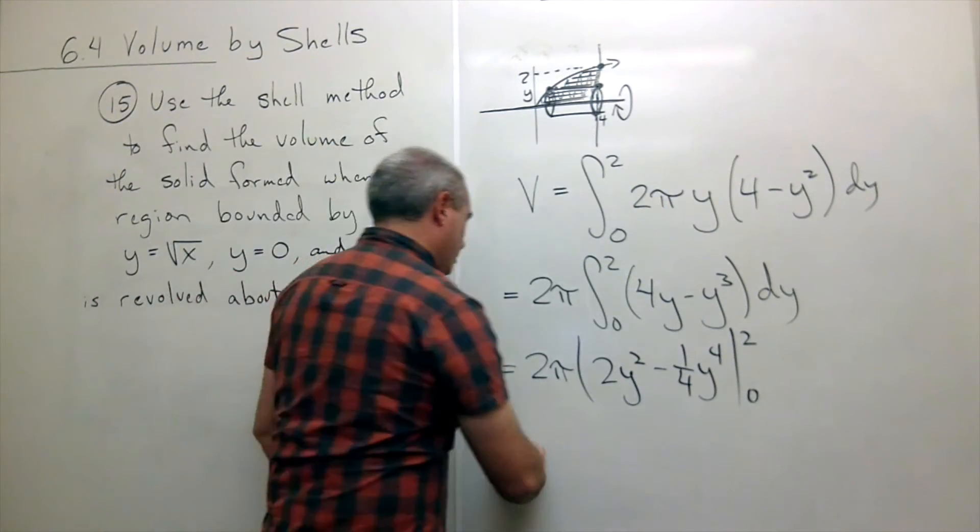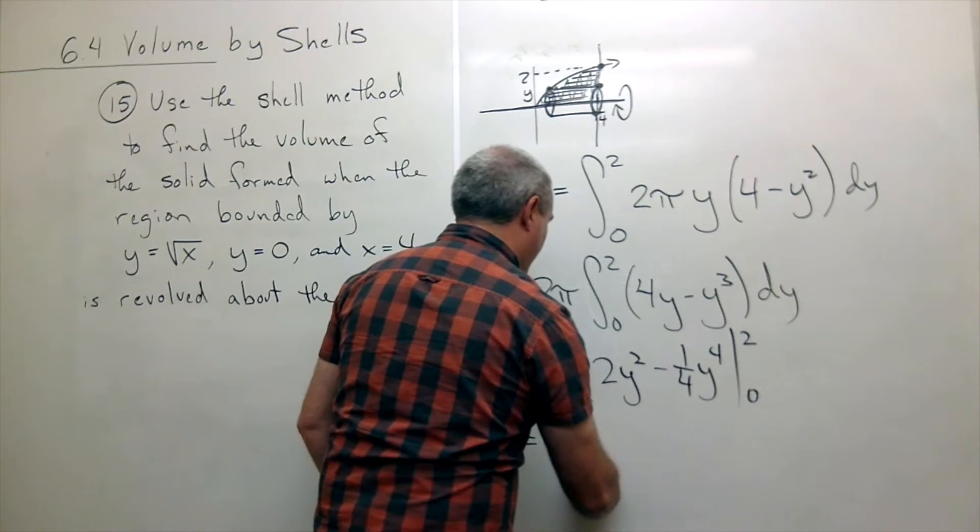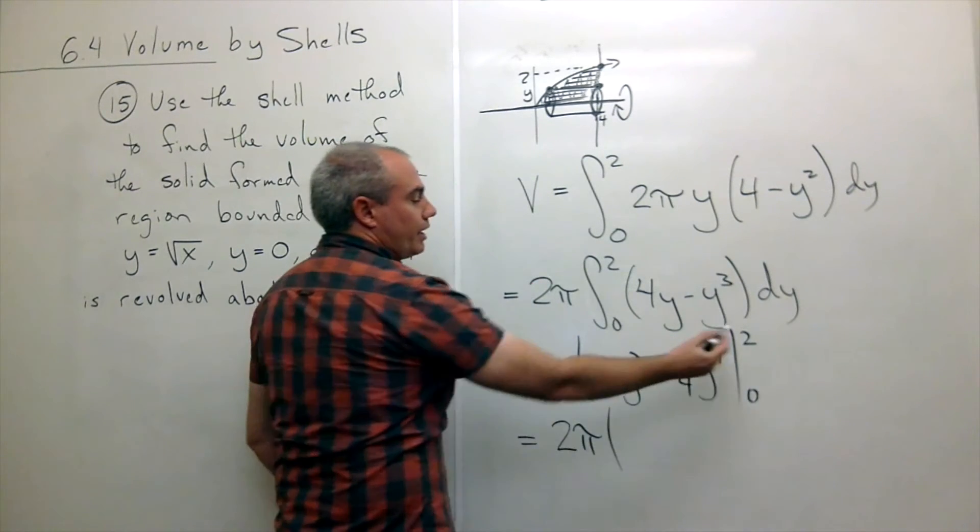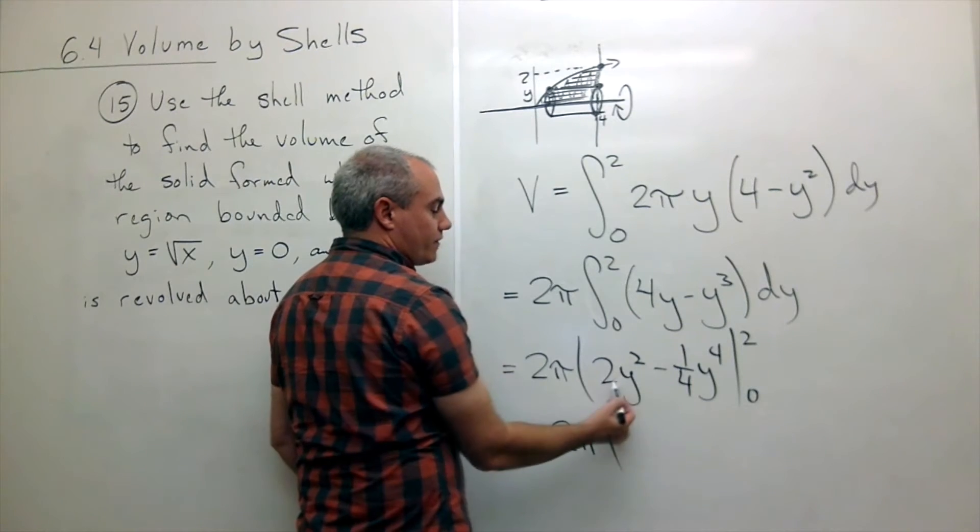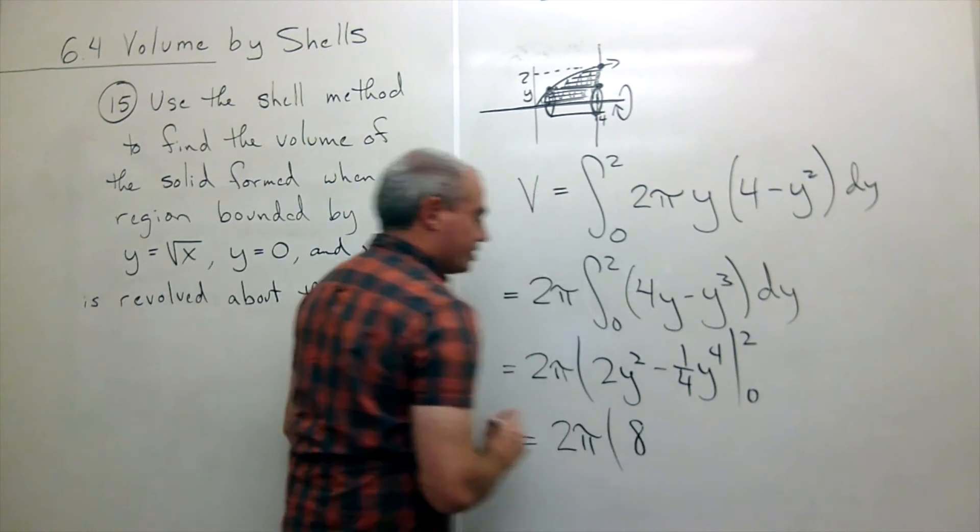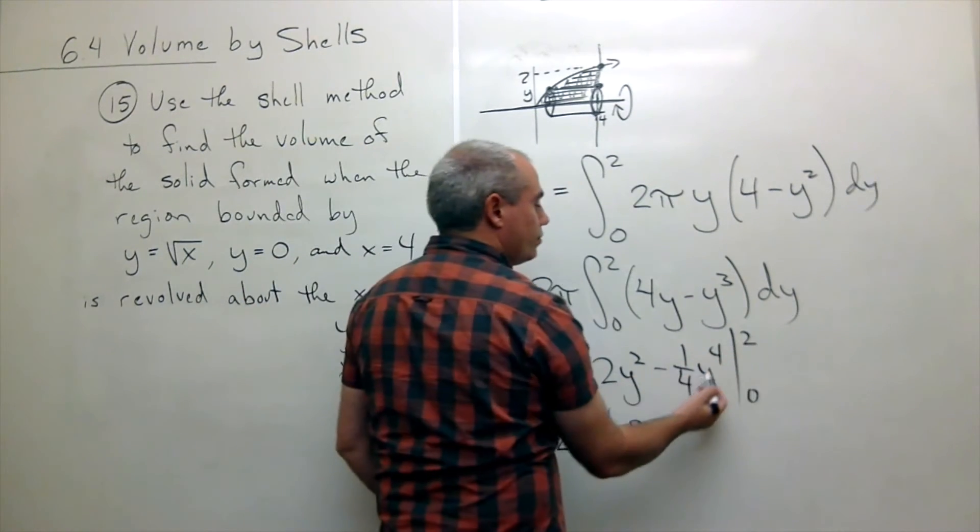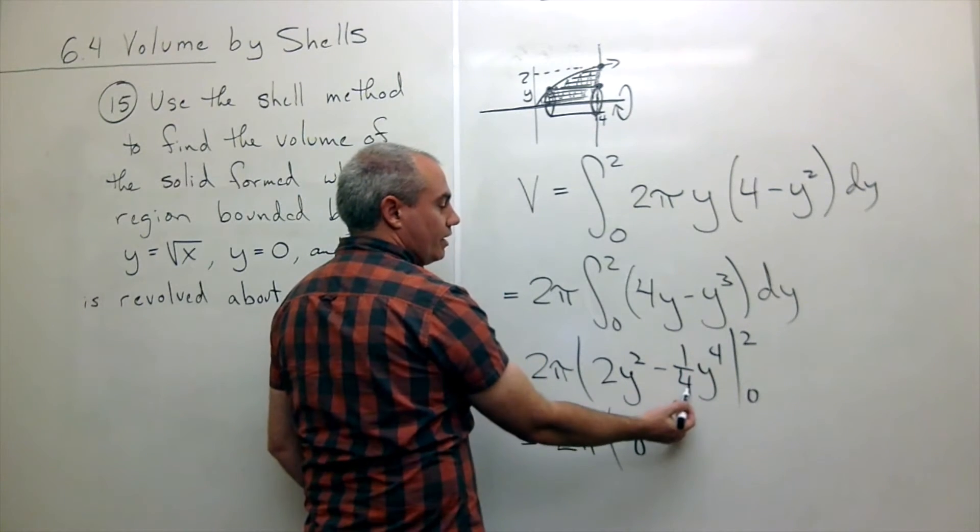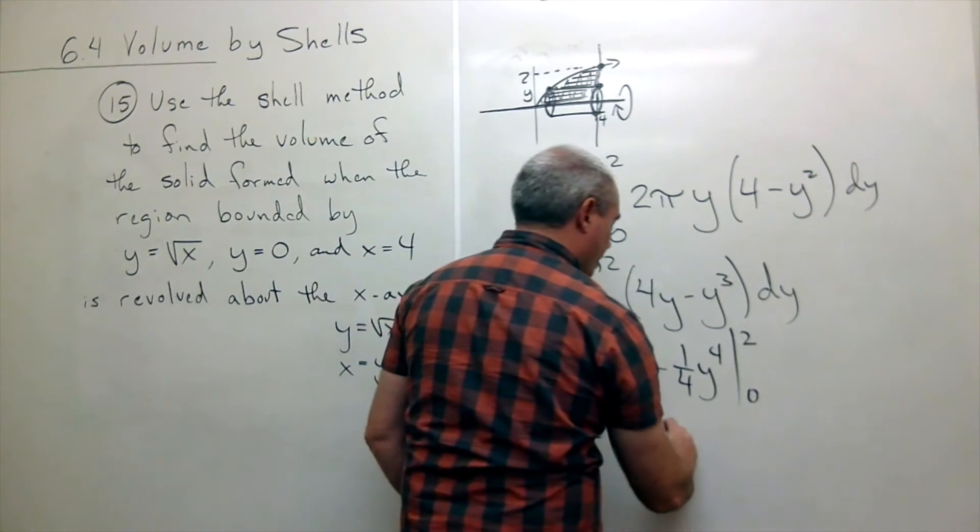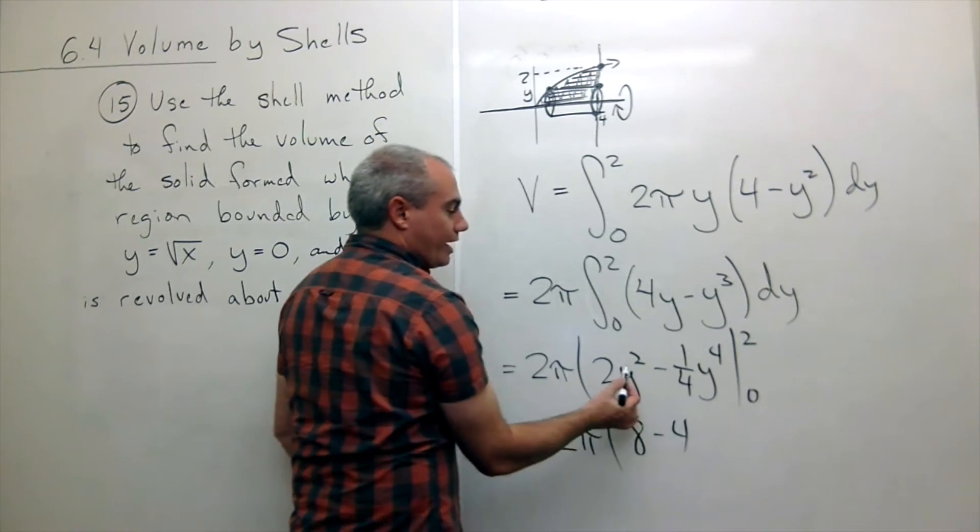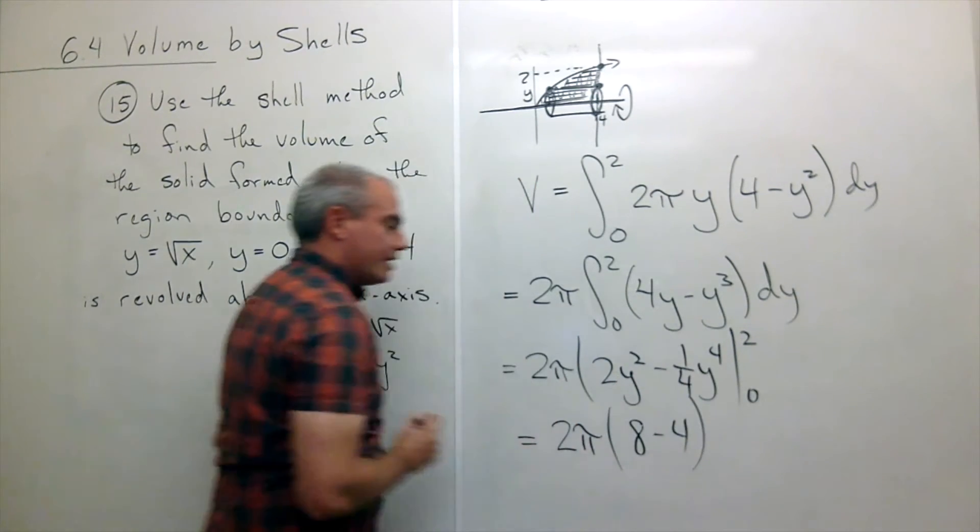Let's plug in our values. I get 2 pi times. Plugging in 2, I get 2 squared, which is 4 times 2, which is 8. Then I get 2 to the fourth, which is 16 divided by 4, which is minus 4. And then I can plug in 0, and I get 0 minus 0. So that's it.